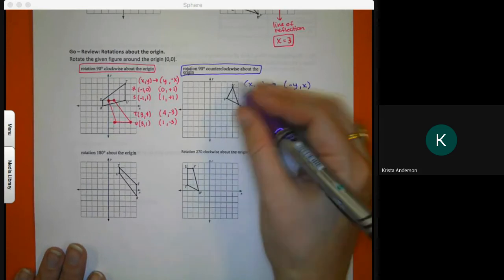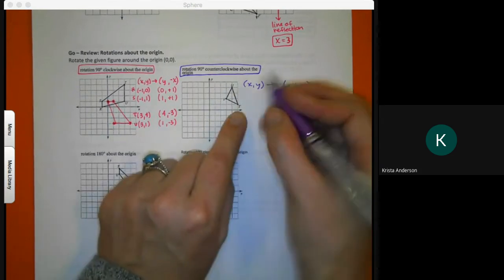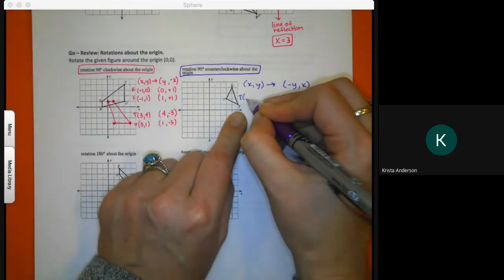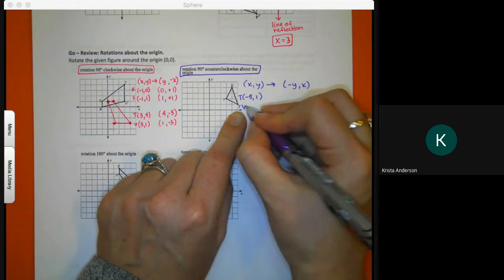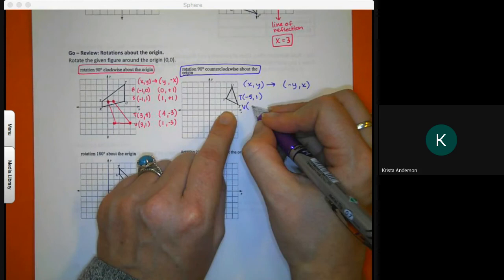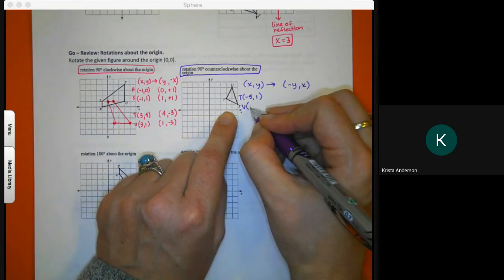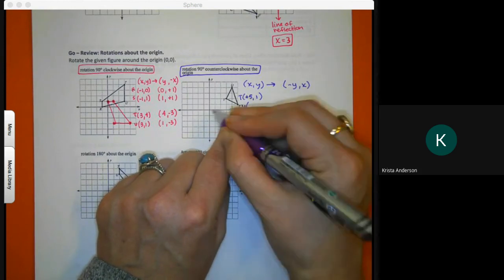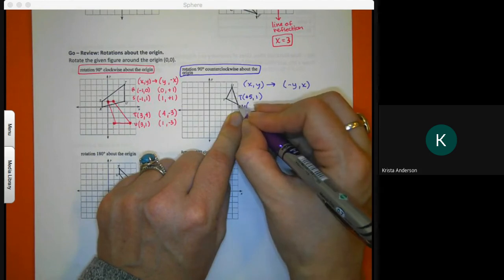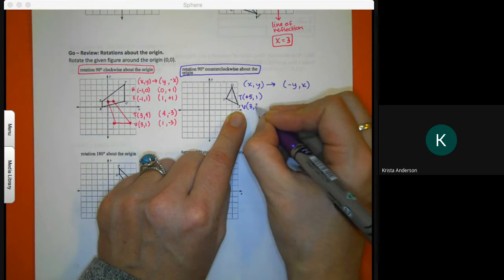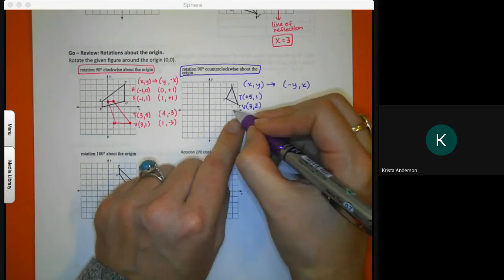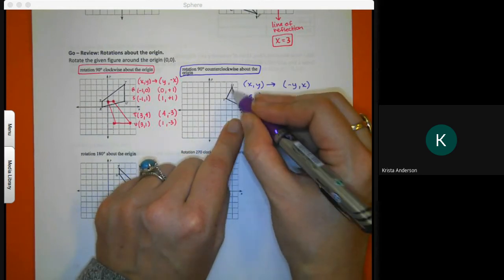That means I'm going to change my point to a negative y comma x. My points, I only have three on this one. T is at negative five up one, V is at - what I put negative five, I'm sorry - positive five of one, positive three up two, positive four up one.